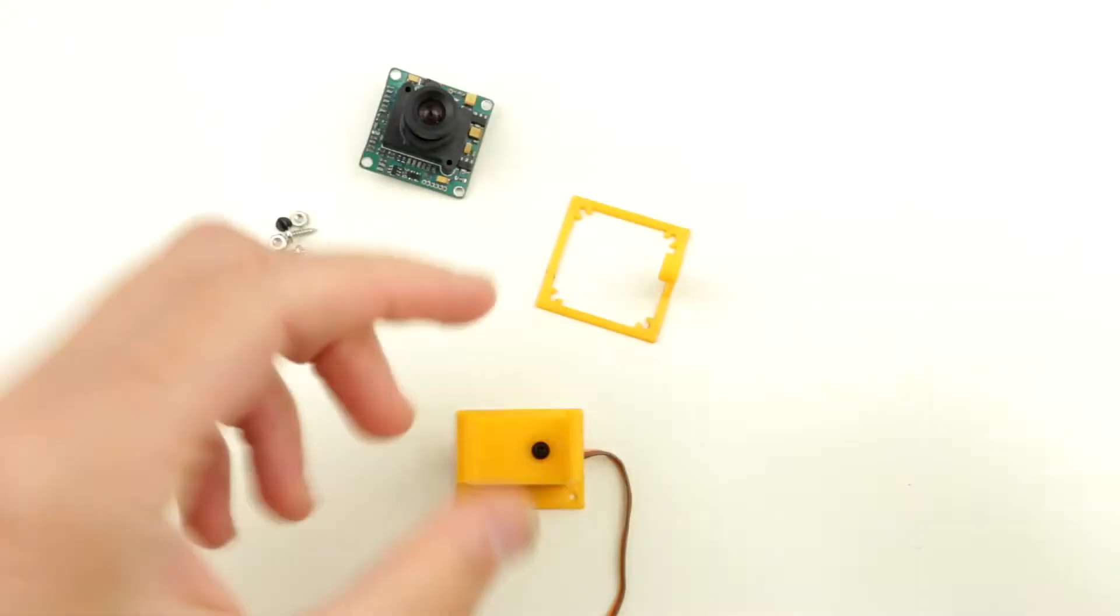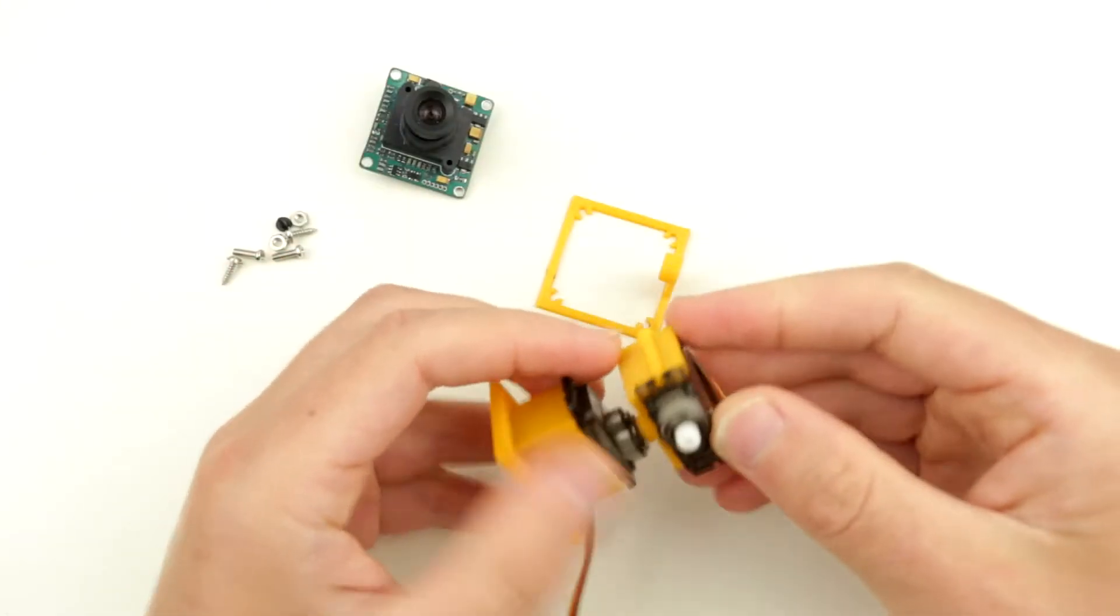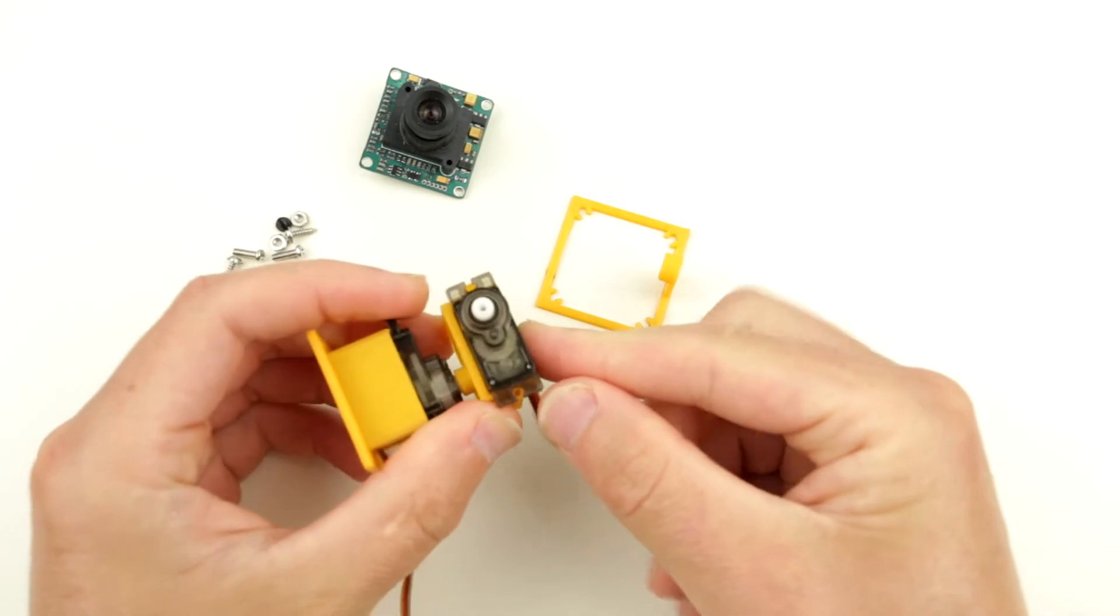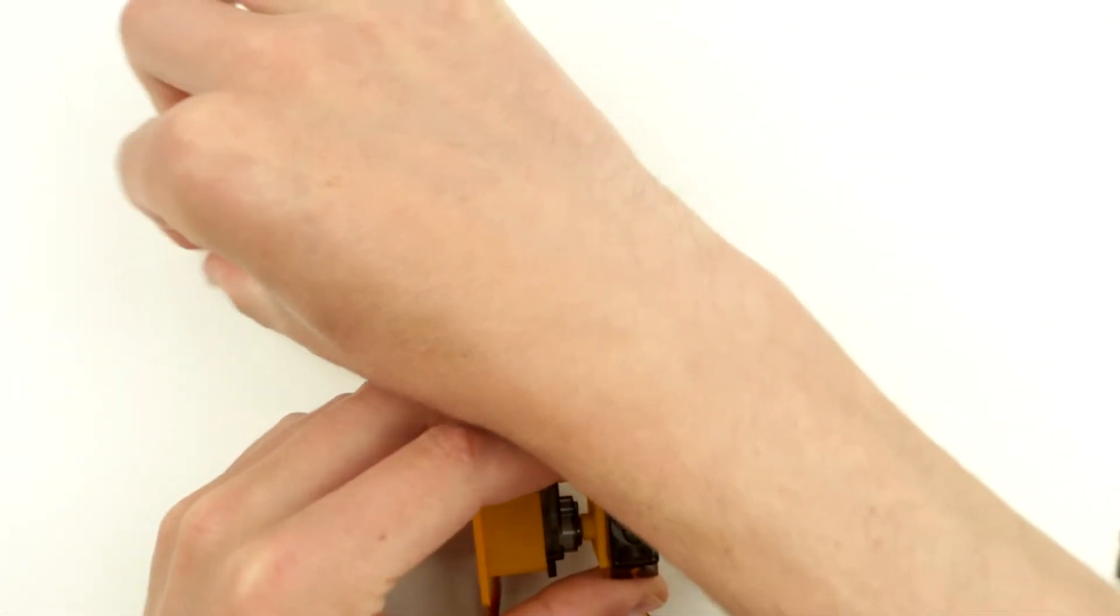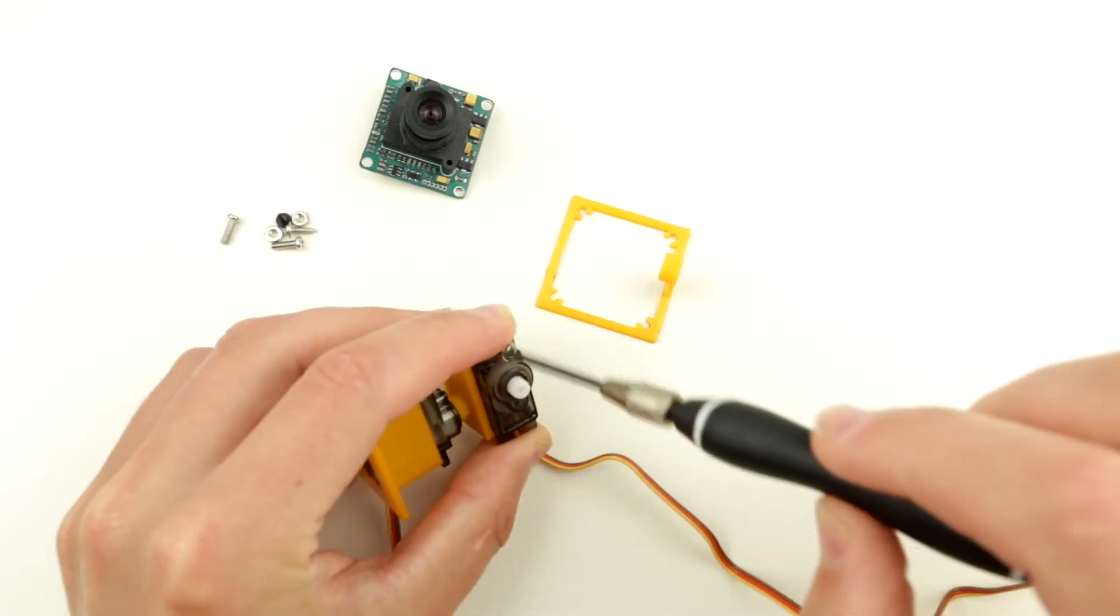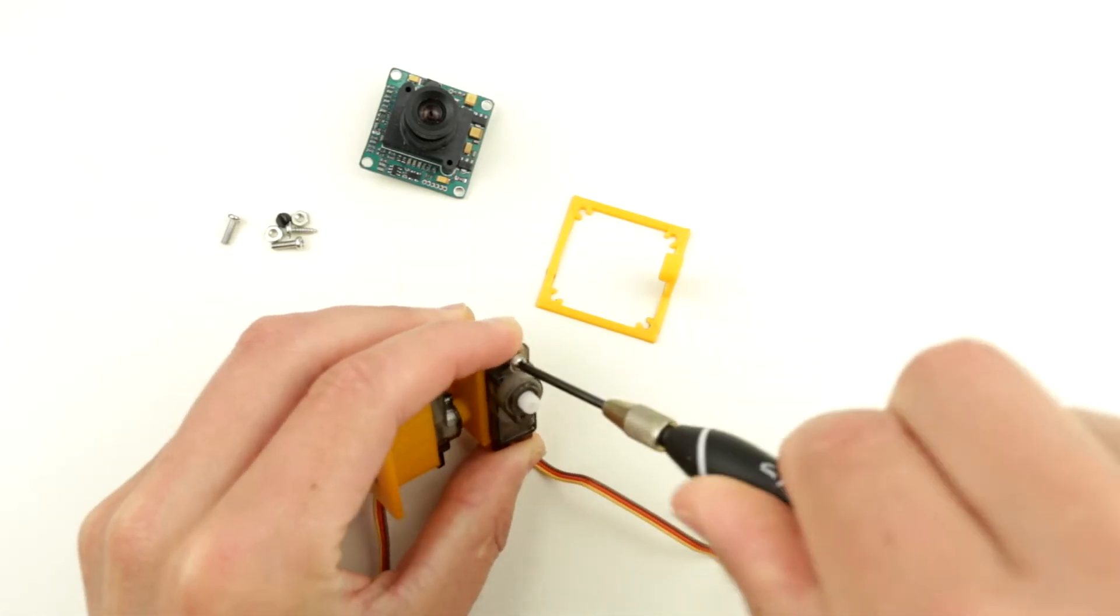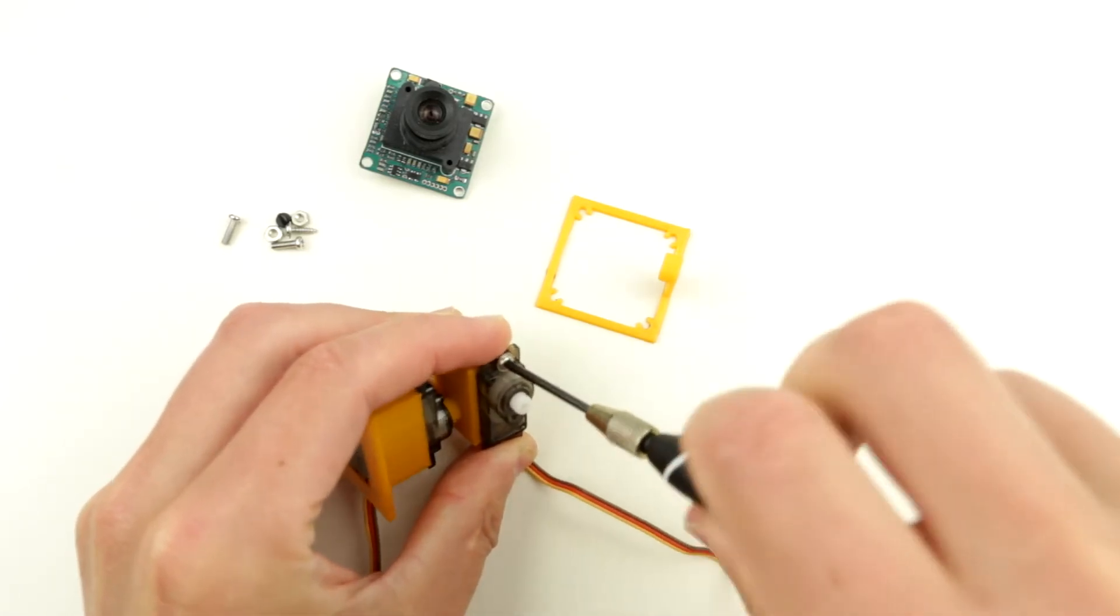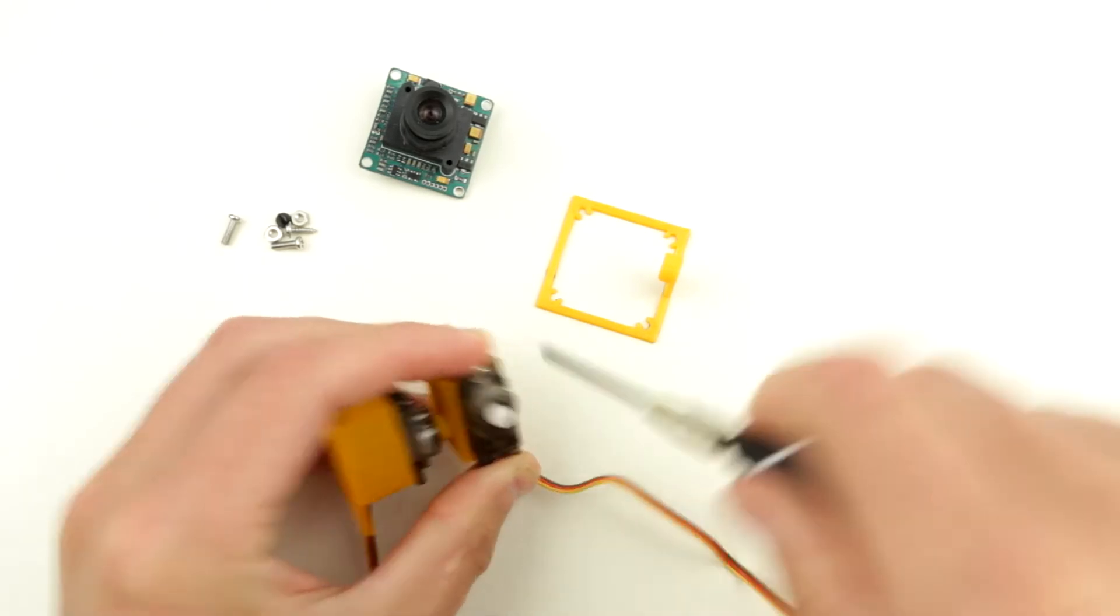Now, top servo. Top servo just goes like this. Alright, as you see, and then very simply, you can just screw it, secure it with those supplied tiny screws, just like that.